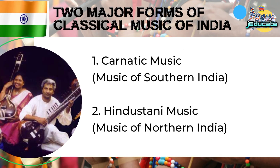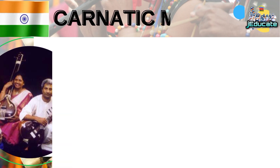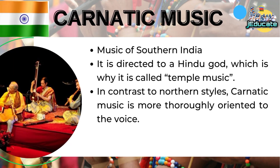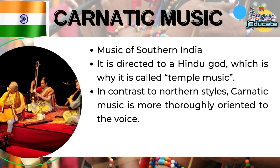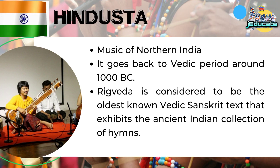Two major forms of classical music of India. Number 1, Carnatic music, music of Southern India. Number 2, Hindustani music, music of Northern India. Carnatic music is directed to a Hindu god, which is why it is called Temple music. In contrast to Northern styles, Carnatic music is more thoroughly oriented to the voice. Hindustani music goes back to the Vedic period around 1000 BC. The Rig Veda is considered to be the oldest known Vedic Sanskrit text that exhibits the ancient Indian collection of hymns.